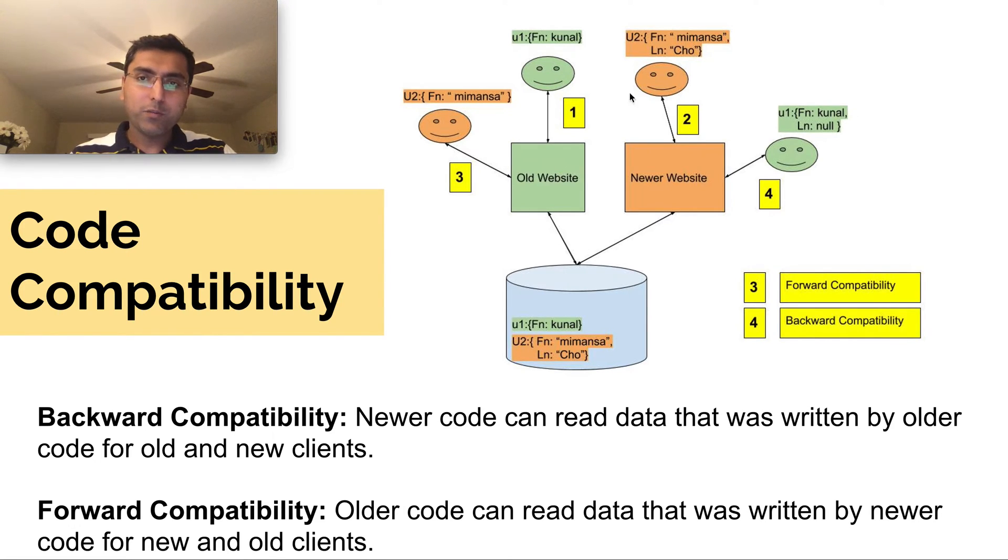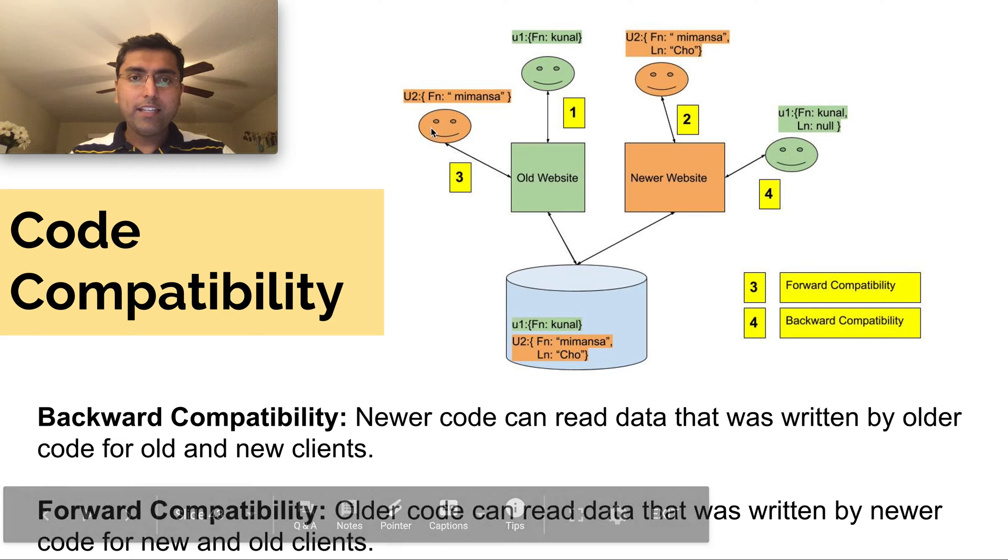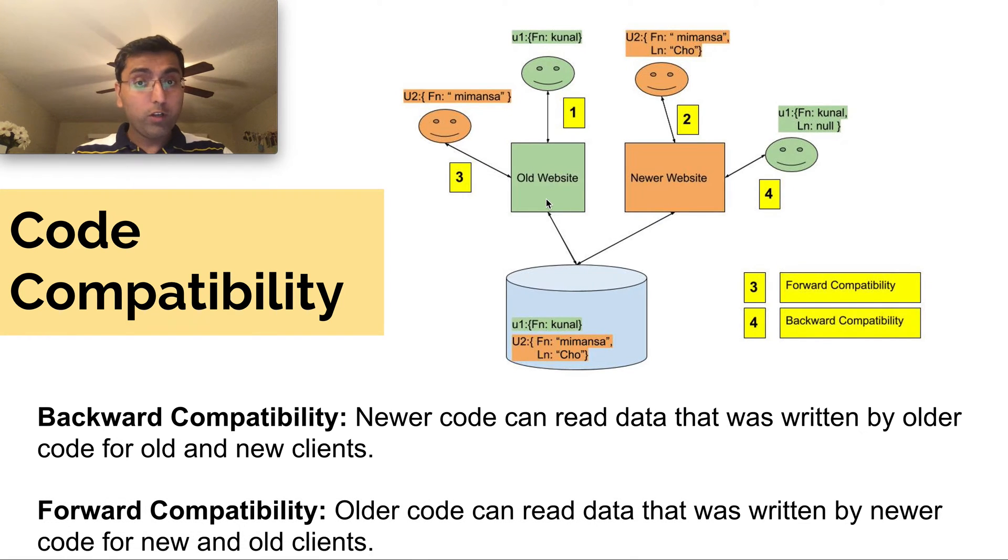Now think about this. What if a user, user two, goes back to this service? Somehow talks to this service or there's another user who was in the same category who had the new data. So let's say user two goes to the old website or the old form page and tries to retrieve the data. Remember, user two wrote in first name and last name. The old website just understands the first name. How would this work?